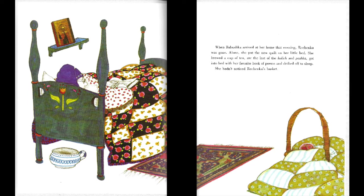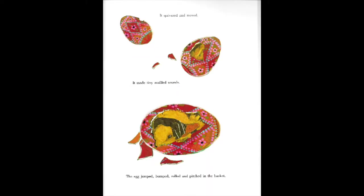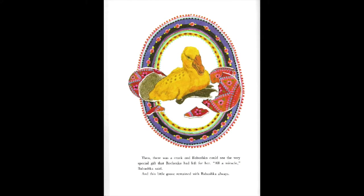She hadn't noticed Rishenka's basket. But that night, Babushka was awakened from a sound sleep by an ever so small sound. It was coming from Rishenka's basket. She hobbled closer and saw a glorious egg. But this one was different from all the others. It quivered and moved. It made tiny, muffled sounds. The egg jumped, bumped, rolled, and pitched in the basket. Then there was a crack, and Babushka could see the very special gift that Rishenka had left for her. 'All a miracle,' Babushka said. And this little goose remained with Babushka always.